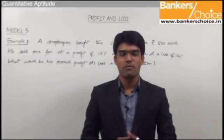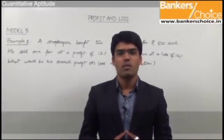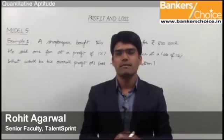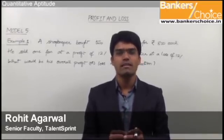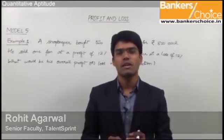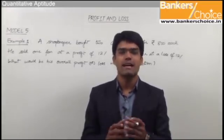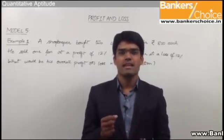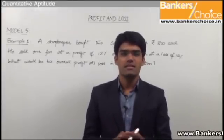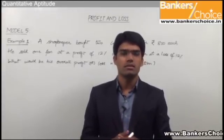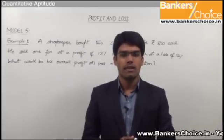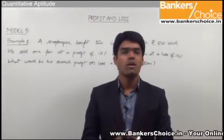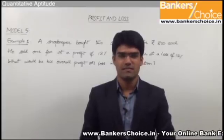Let us now take the fifth model from profit and loss, where we have a set of questions where either the selling price of two articles or the cost price of the two articles are equal, and the profit percentage and the loss percentage made on each of these articles are also equal. We are supposed to find out what would be the overall profit or loss percentage.